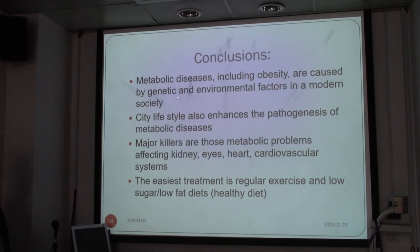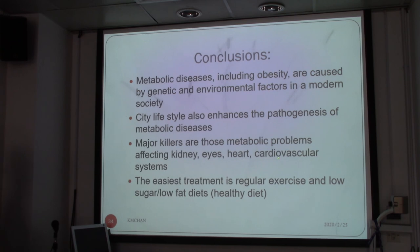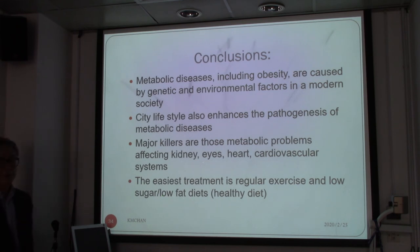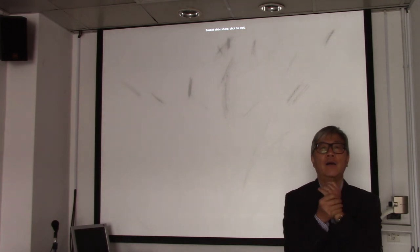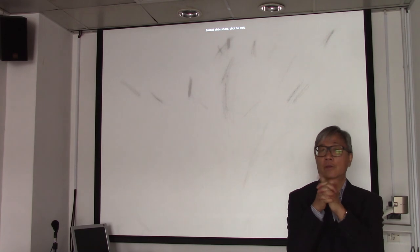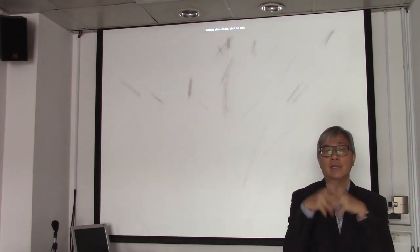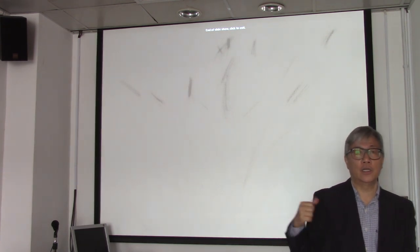In conclusion, metabolic diseases including obesity are caused by genetic and environmental factors. In modern society, a sedentary lifestyle enhances metabolic diseases. The major metabolic problems affect the kidneys, eyes, heart, and cardiovascular system. The easiest treatment is regular exercise and a low-sugar, low-fat diet — in other words, a healthier diet. With that, we finish all three videos on hormonal control of sugar metabolism and fat metabolism. Don't forget you are required to do the assignment, and one of the questions relates to this topic.